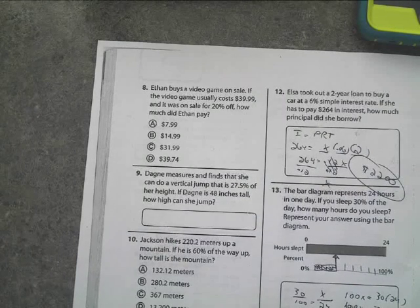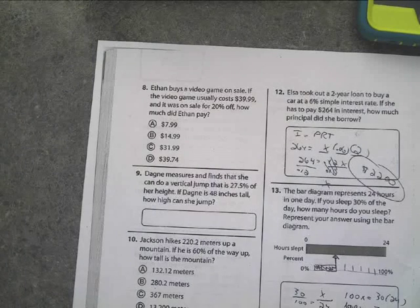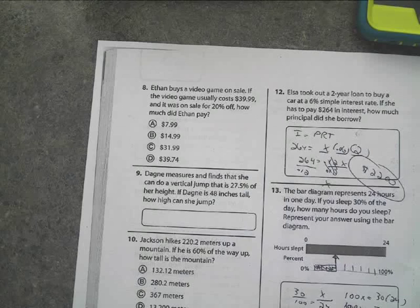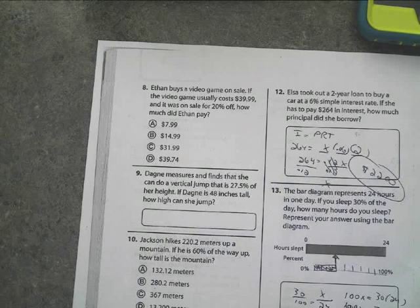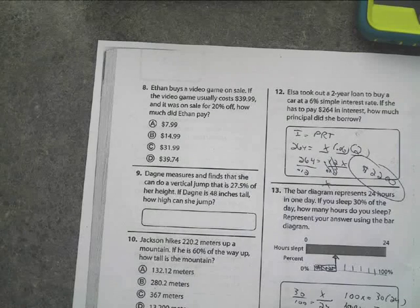Okay, Ethan buys a video game on sale. If the video game usually costs $40, I just look at it and say, here's the deal. Ethan, $39.99 is too tough of a number for Ethan. And I will show you how to mathematically do the problem exactly, and I'm also going to show you that common sense math on multiple choice. Please use it.